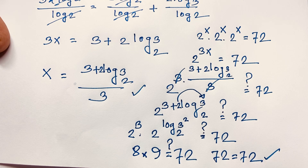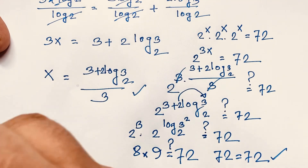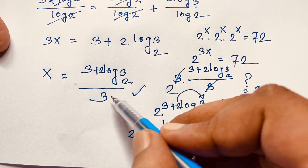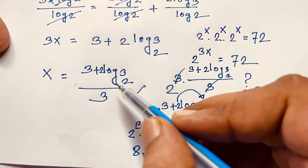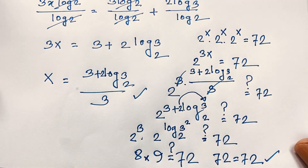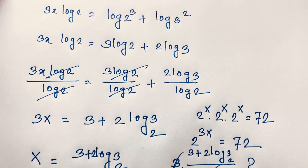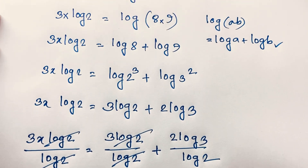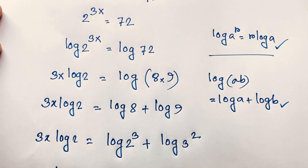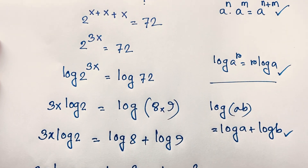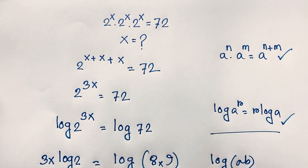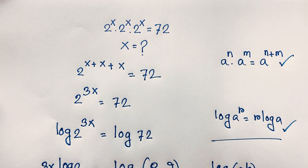So x equals (3 + 2·log₂3) / 3. This is our final answer in this math problem. Thank you all — if you enjoyed this video, please subscribe to my channel for other interesting videos. Goodbye, take care!